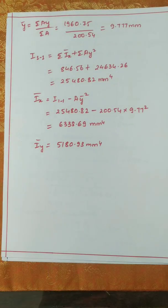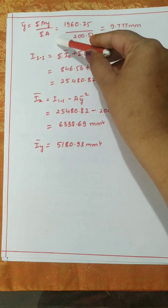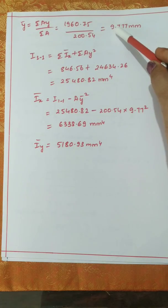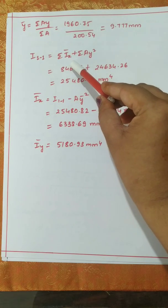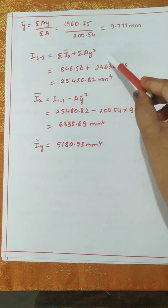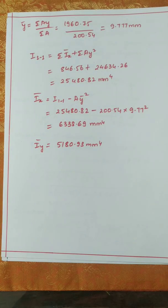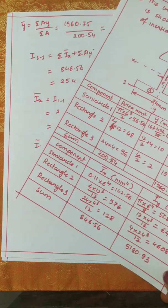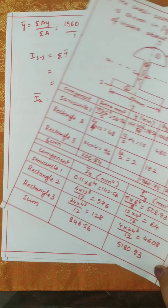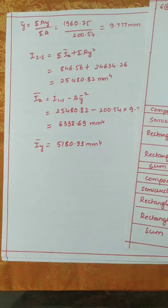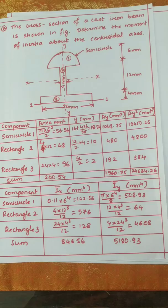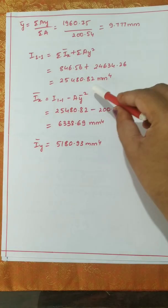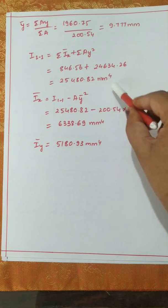Now let us find ȳ_bar, which is summation of A·Y divided by summation of A. We get 9.77 mm. Then I_11 = summation of I_x̄ plus summation of A·Y². Summation of I_x̄ is 846.56 and summation of A·Y² is 24634.26, giving I_11 = 25480.82 mm⁴.